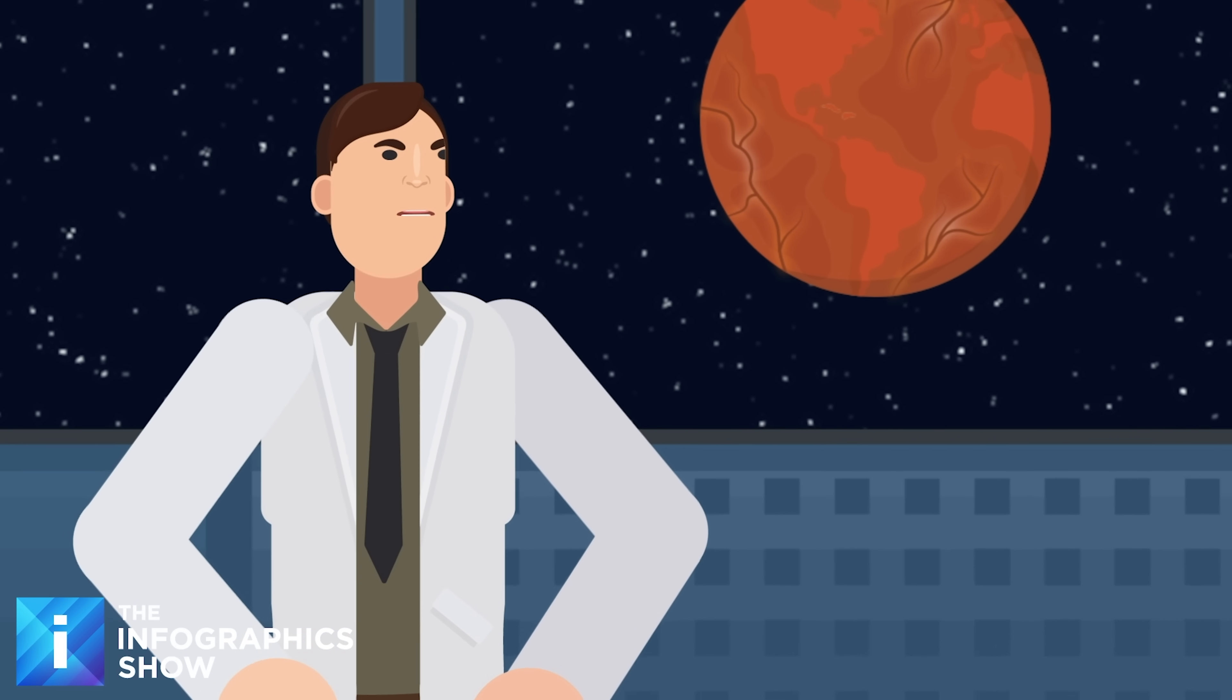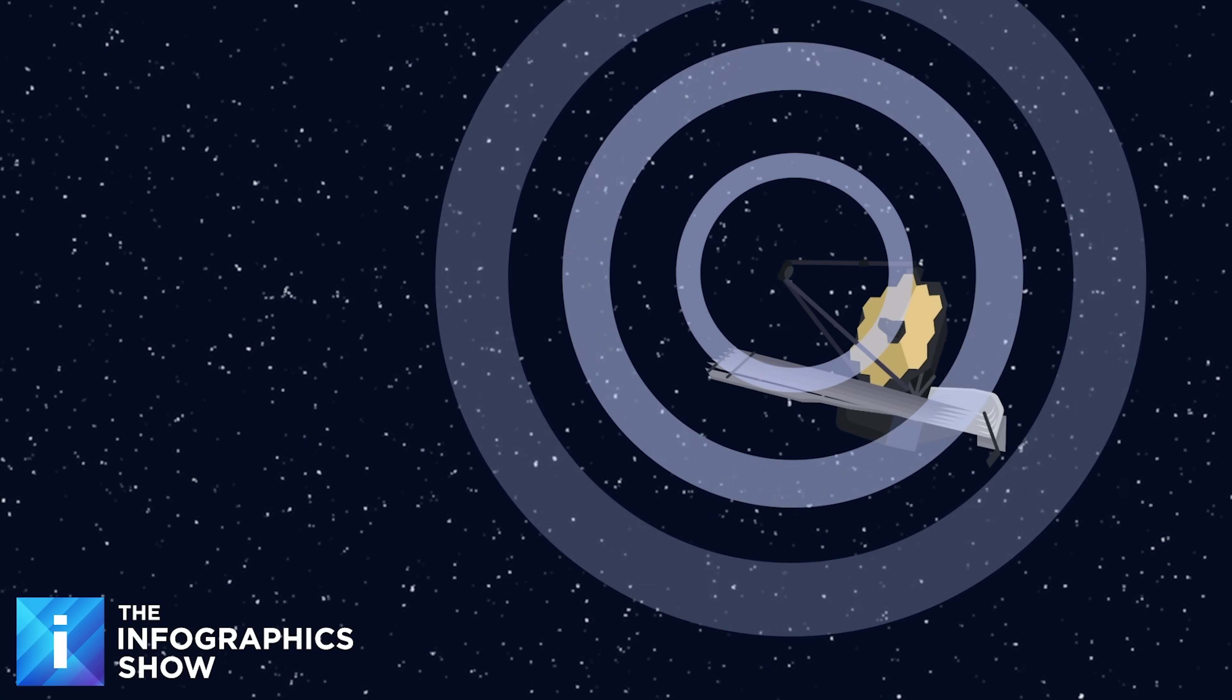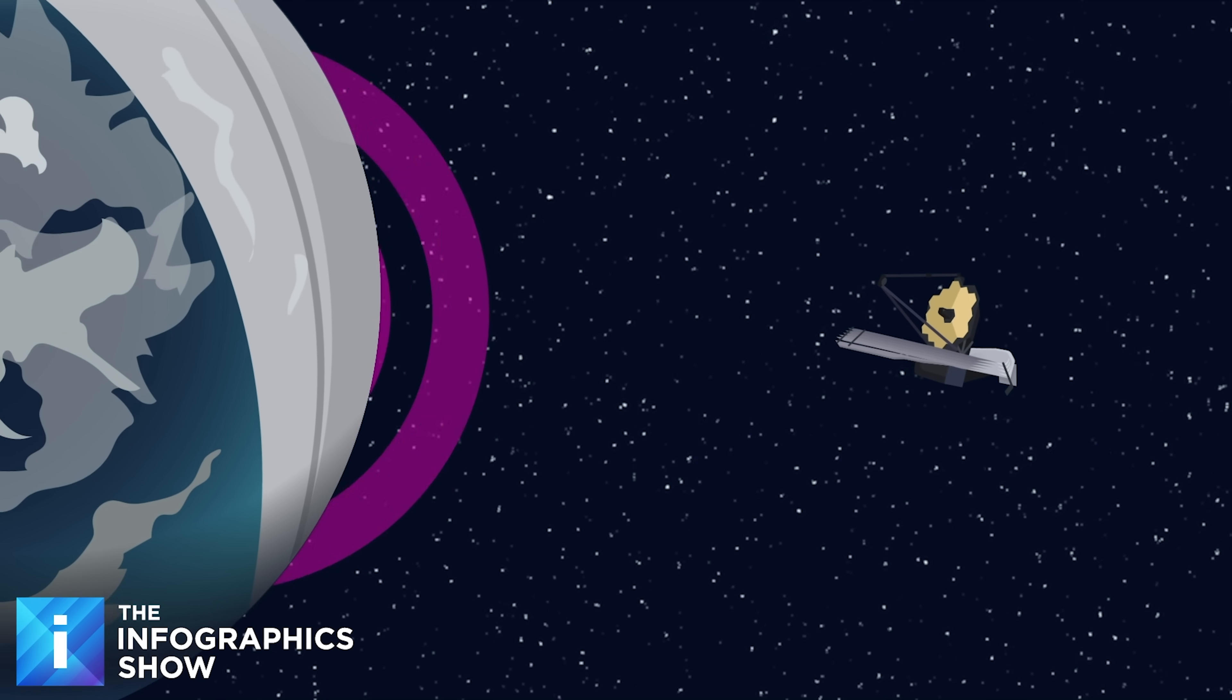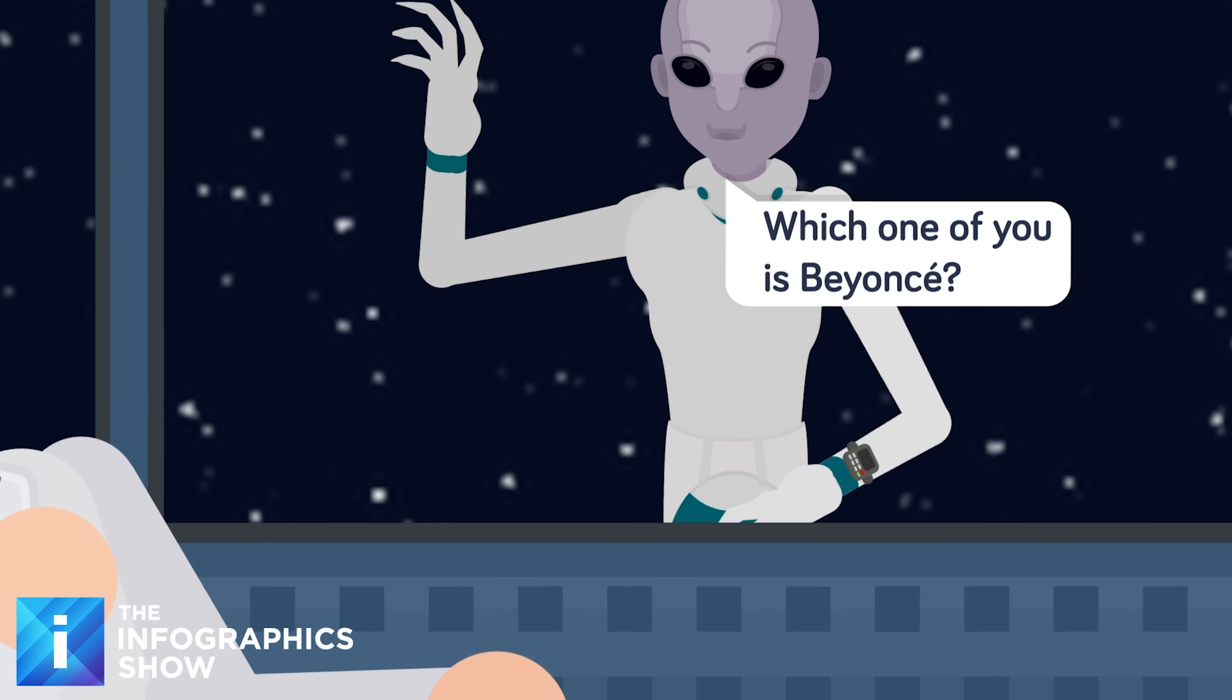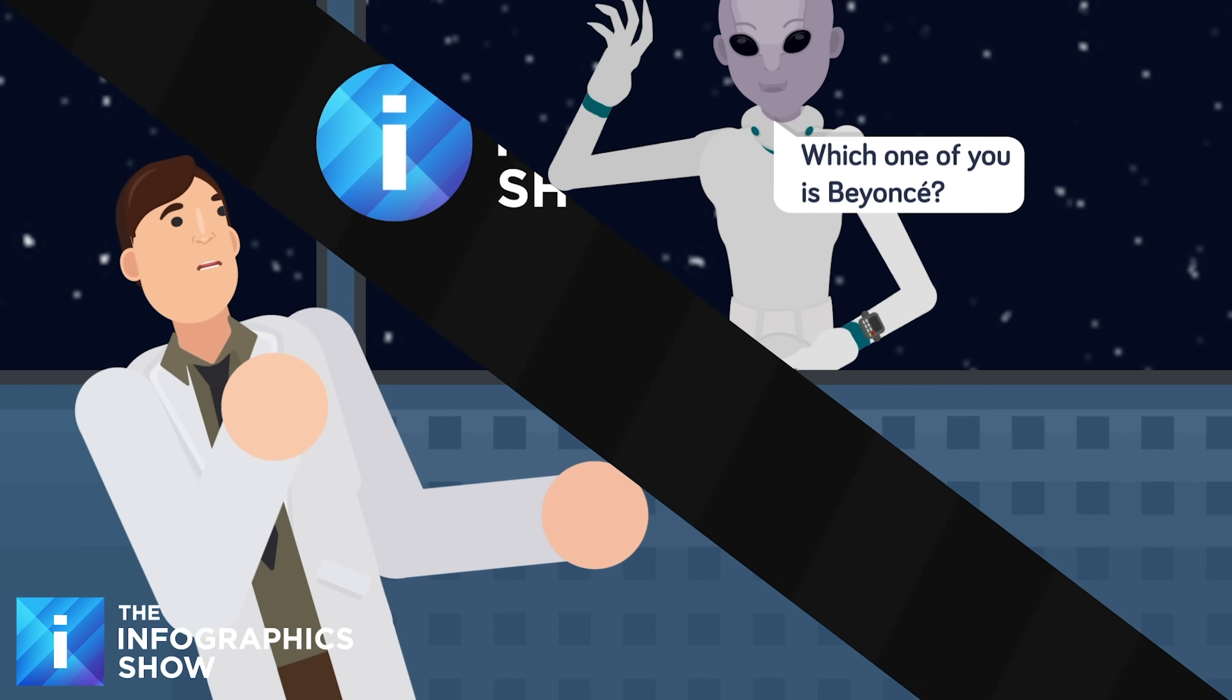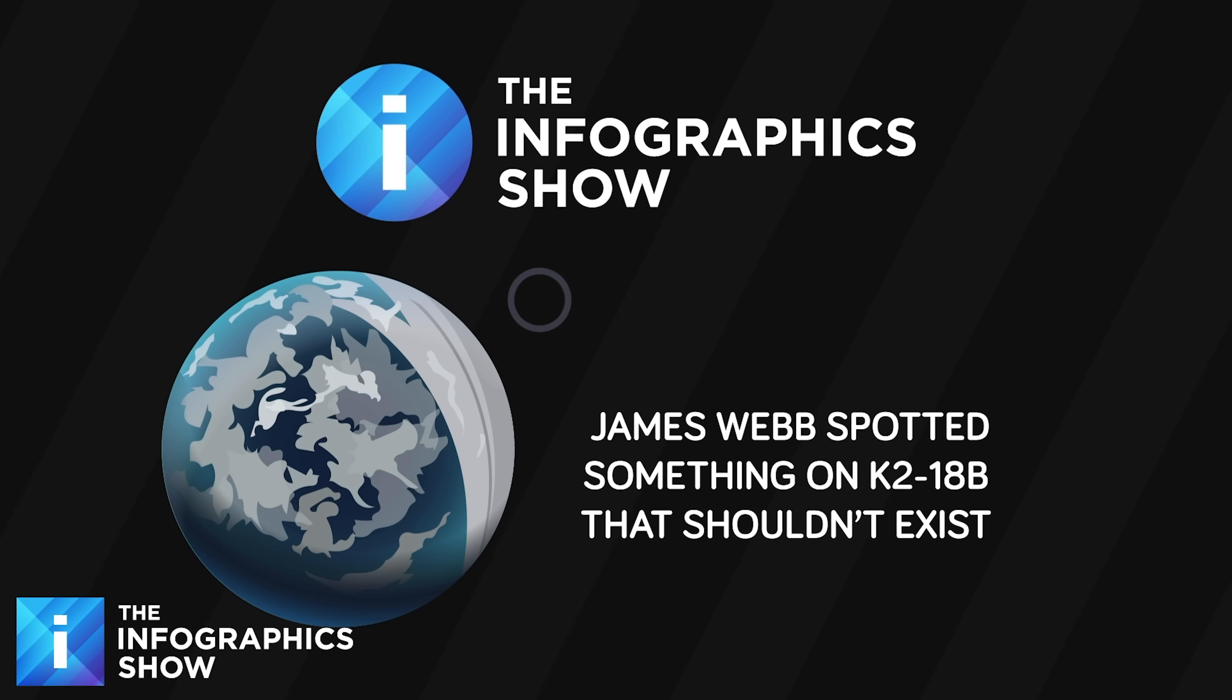It was supposed to be just another routine scan of a lifeless planet, until it wasn't. The James Webb Space Telescope has been silently drifting through space, collecting millions of data points from the vast, cold void. Most of it is standard cosmic noise, but sometimes something extraordinary emerges and challenges everything scientists thought they knew. Something that just might be the first real sign of life beyond our solar system. We're venturing into the unknown on this episode of the Infographics Show. James Webb spotted something on K218b that shouldn't exist without life.